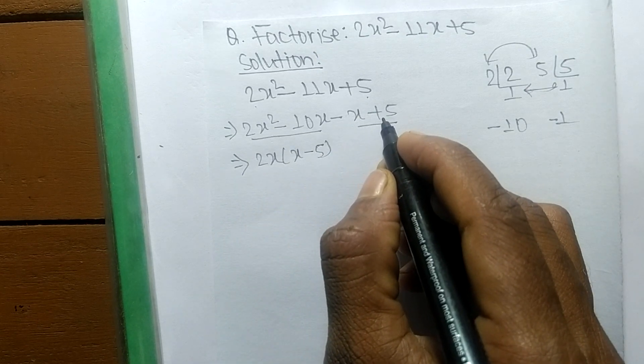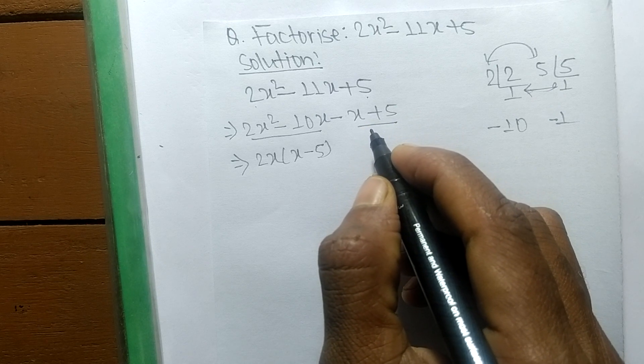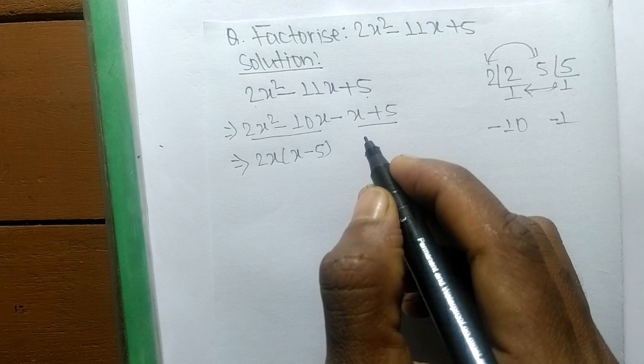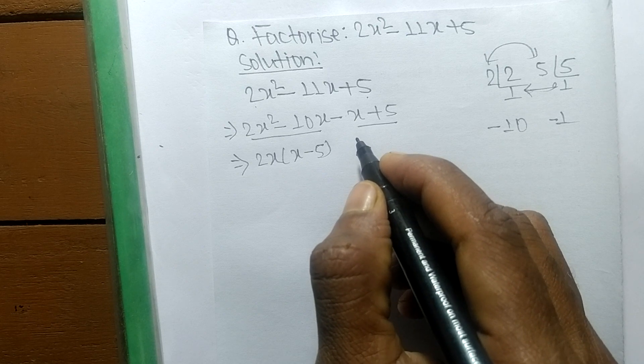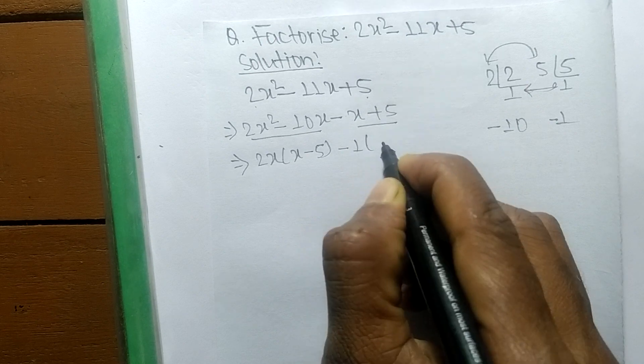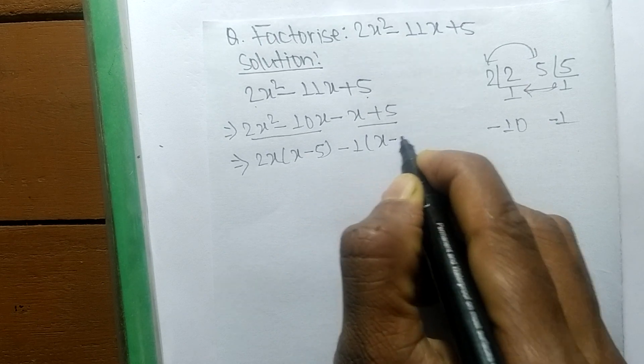In the second pair there is nothing common. In that case, if there are no numbers and alphabets common, then the common becomes 1. The remaining here is x - 5.